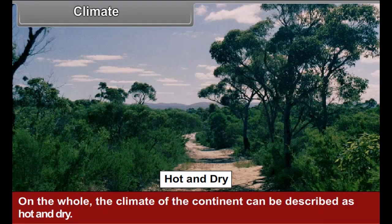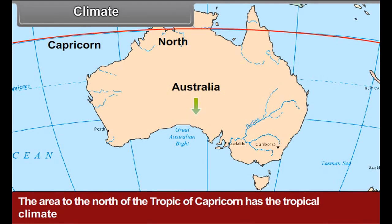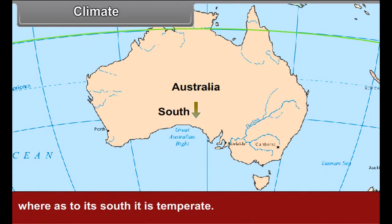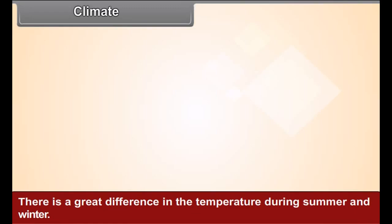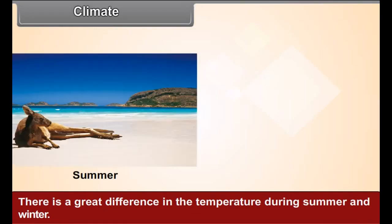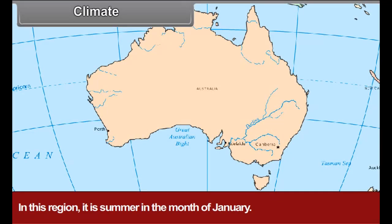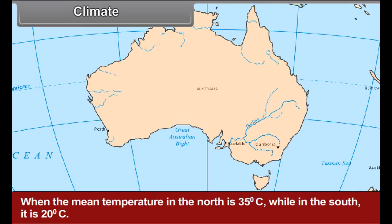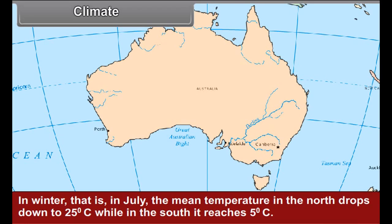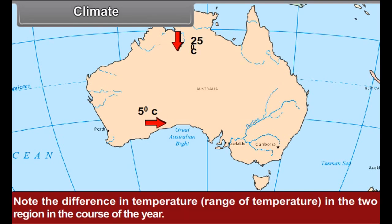On the whole, the climate of the continent can be described as hot and dry. The area to the north of the Tropic of Capricorn has a tropical climate, whereas to the south it is temperate. There is a great difference in temperatures during summer and winter. It is summer in January when the mean temperature in the north is 35 degrees Celsius while in the south it is 20 degrees Celsius. In winter, that is in July, the mean temperature in the north drops to 25 degrees Celsius while in the south it reaches 5 degrees Celsius.